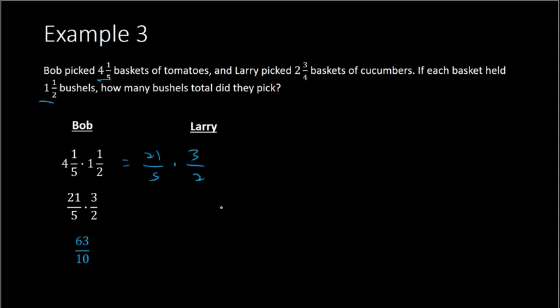Now for Larry, same concept. Larry picked 2 and 3/4 baskets, and each basket held 1 and 1/2 bushels. So if we take 2 and 3/4 times 1 and 1/2, that would give us the amount of bushels that Larry picked. We convert both to improper fractions. The first mixed number, we do 2 times 4 plus 3 to get 11, put that over 4. And then 1 and 1/2 was 3 over 2. So we have 11/4 times 3/2. Nothing cancels. So we multiply 11 times 3 to get 33 over 4 times 2, which is 8.